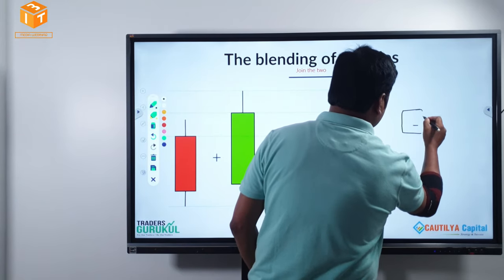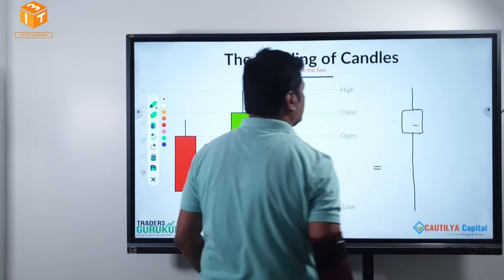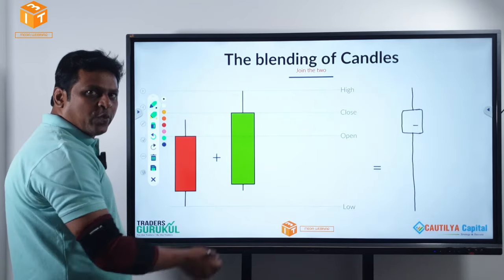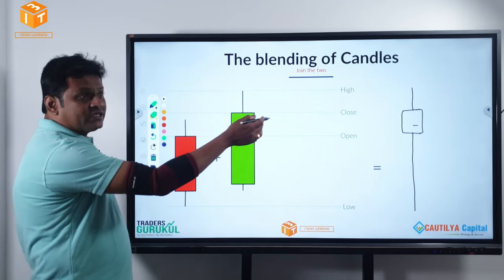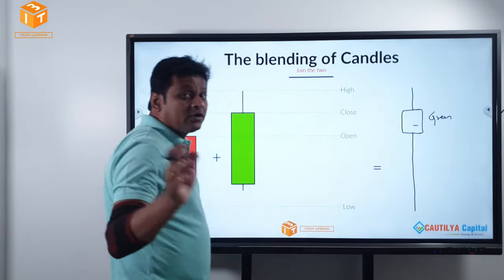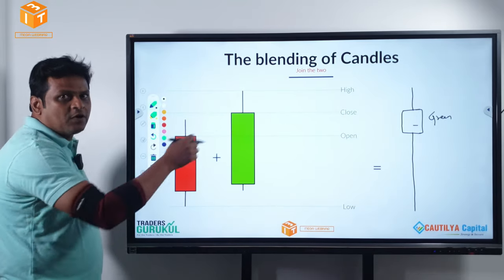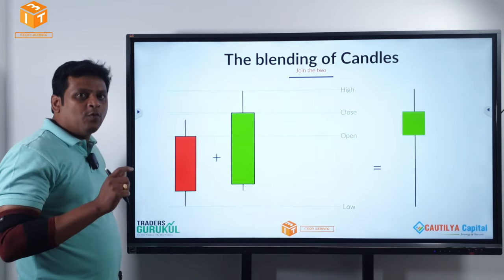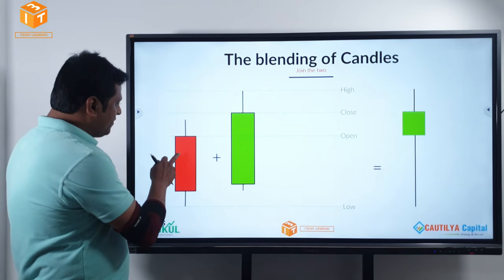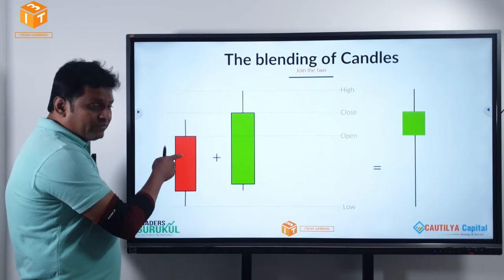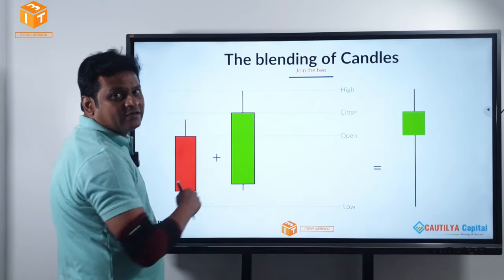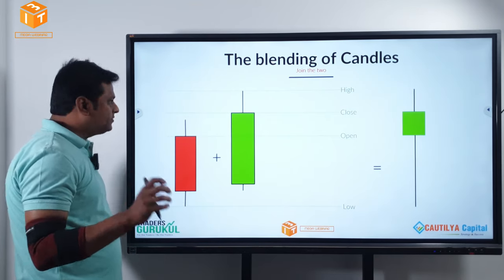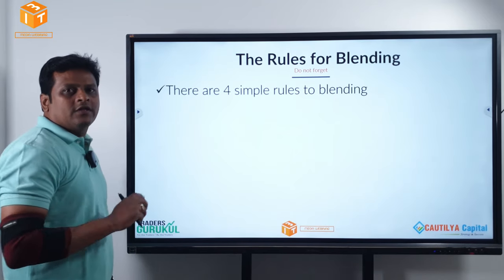When you merge these candles, I framed a rectangle between close and open, and thereafter on both directions I just draw the wicks. Since the close is above the open, it is a green candle. But that's not a momentum candle — that's a base candle, because the body is smaller. The outcome is a base candle because you have one bearish momentum and one bullish momentum. When you combine these two, it opened on top, came down, and closed on top.